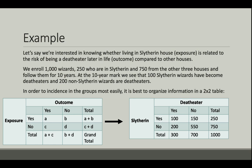Let's say we're interested in knowing whether living in Slytherin house — which is our exposure — is related to the risk of being a death eater later in life. That's our outcome, compared to other houses. We enroll 1,000 wizards: 250 who are in Slytherin and 750 from the other three houses, and follow them for 10 years. At the 10-year mark, we see that 100 Slytherin wizards have become death eaters and 200 non-Slytherin wizards are death eaters.